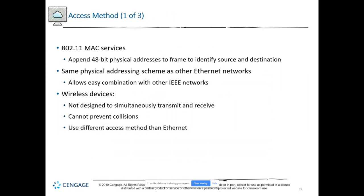The 802.11 standard uses a different kind of MAC address service, substantially larger than Ethernet's. Also, 802.11 uses half-duplex — devices can either transmit or receive but can't do both simultaneously, unless you have more than one transceiver. It appends a 48-bit physical address like Ethernet does, simulating Ethernet so the frames are similar.